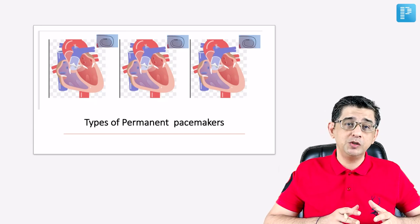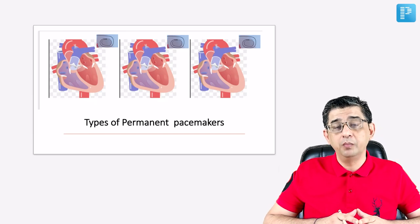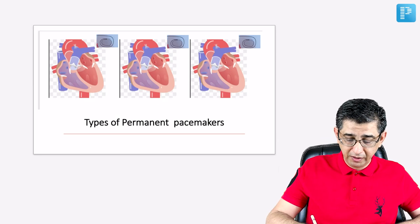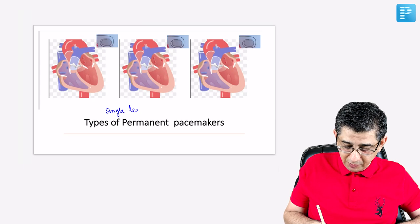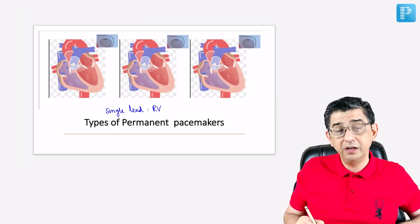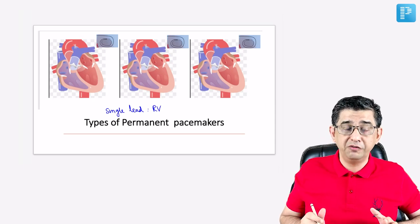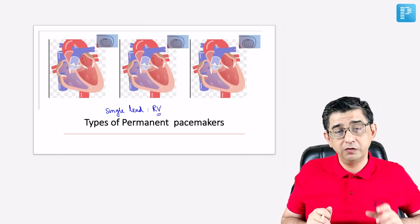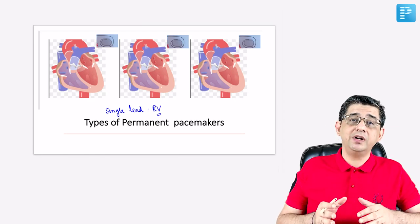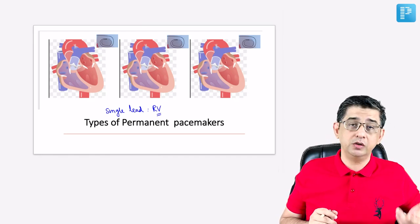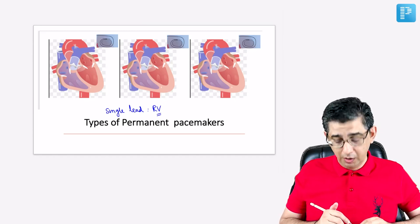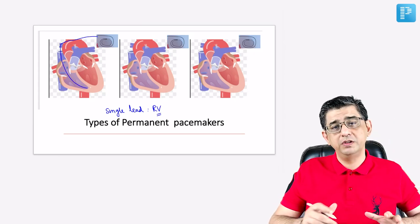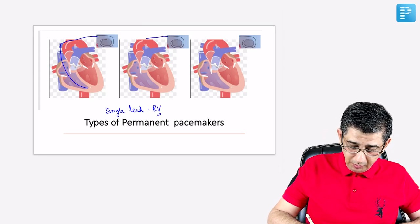The initial pacemakers had a wire going to the right ventricle. Though the SA node is in the right atria, for a single lead pacemaker, you would select the right ventricle — because one basic function of the heart is sending blood to the lungs. If you control the right atria but the AV node or bundle of His malfunctions later, your effort is wasted. So in a single lead pacemaker, the wire touches the right ventricular endocardium, though it can also end in the right atrial appendage.